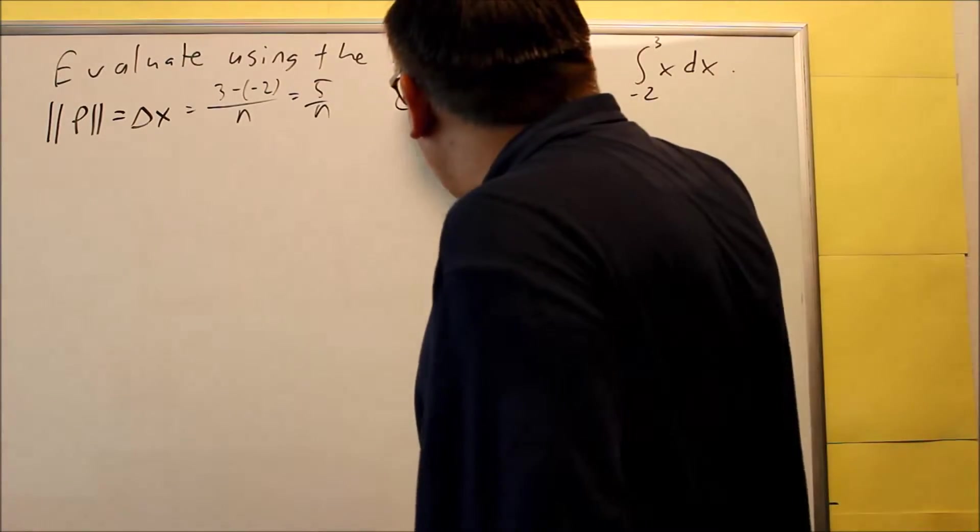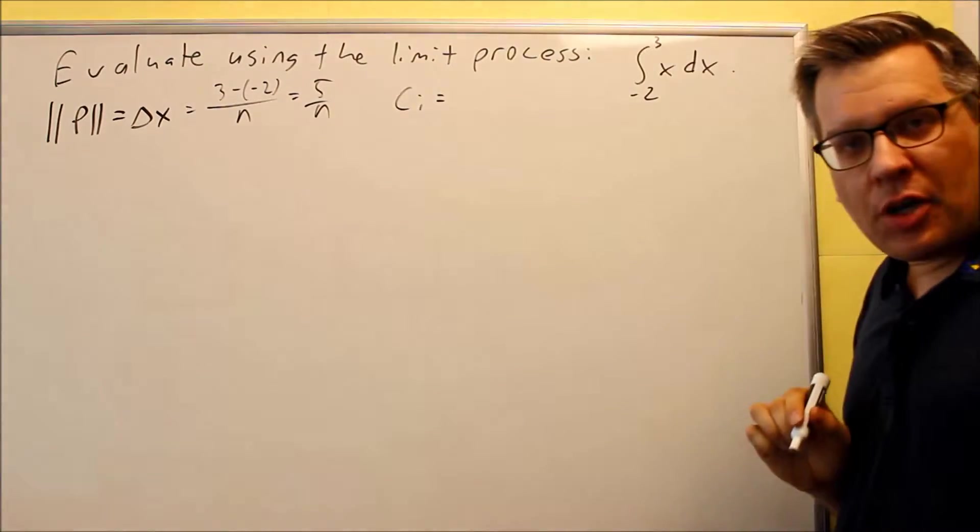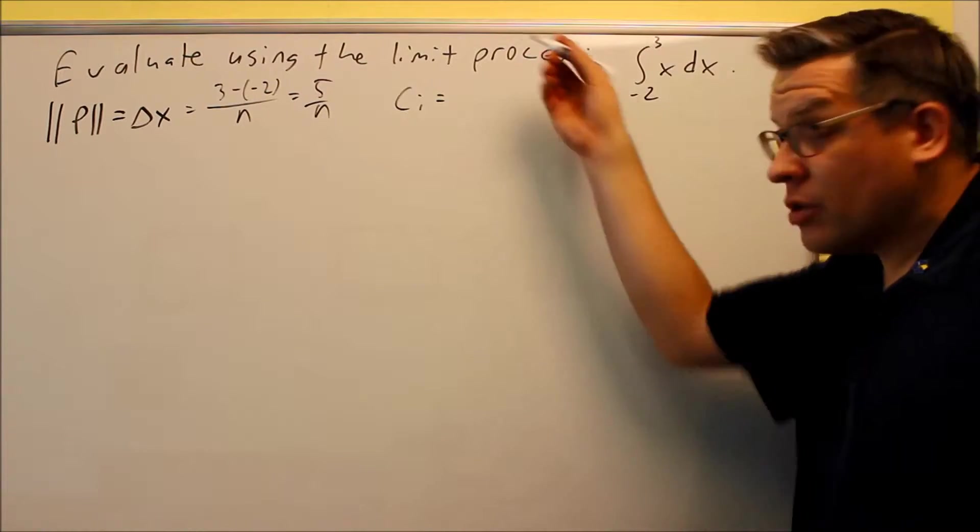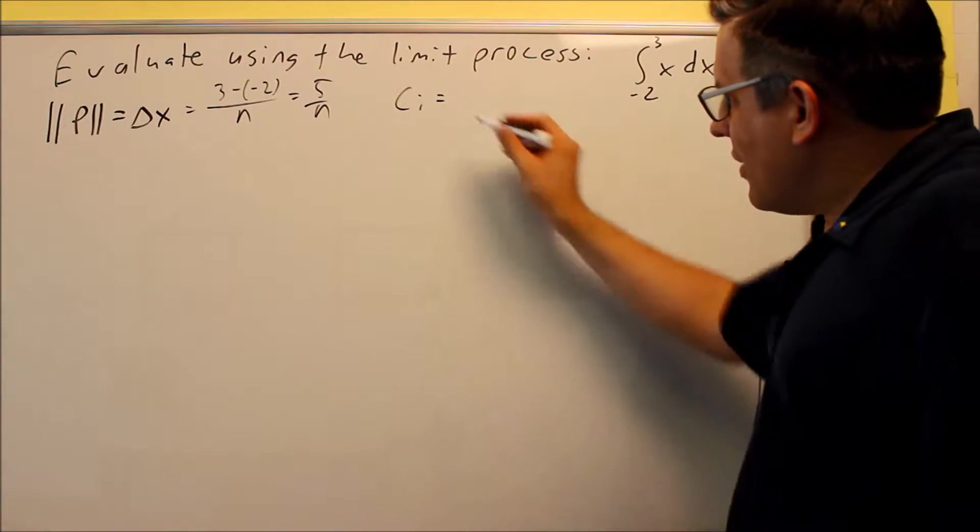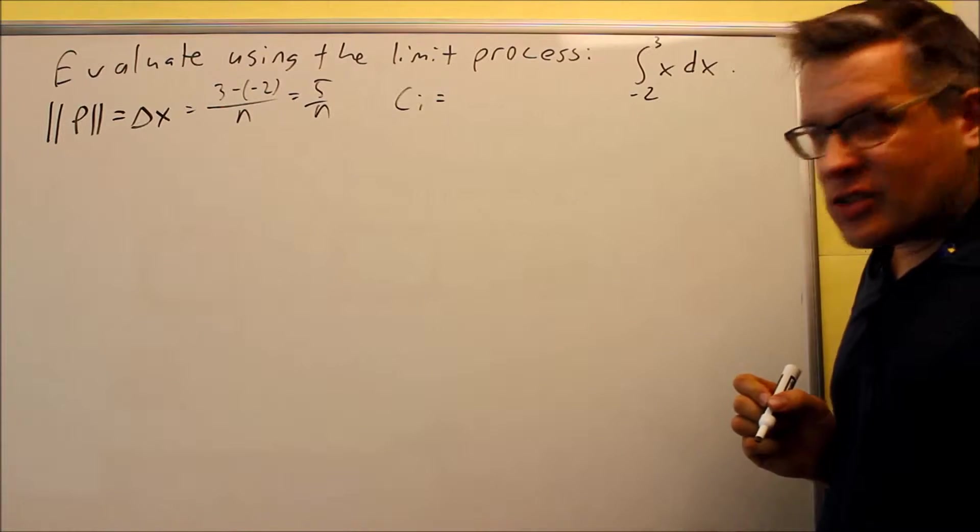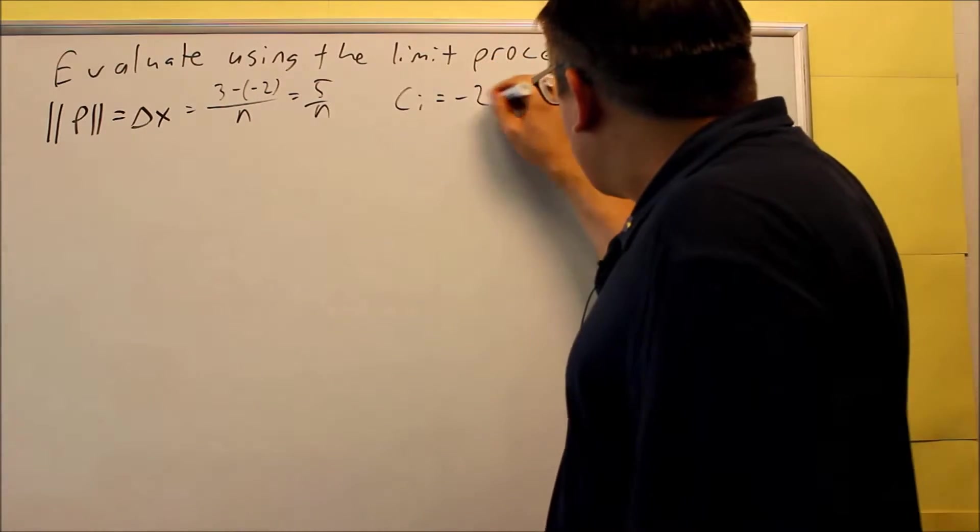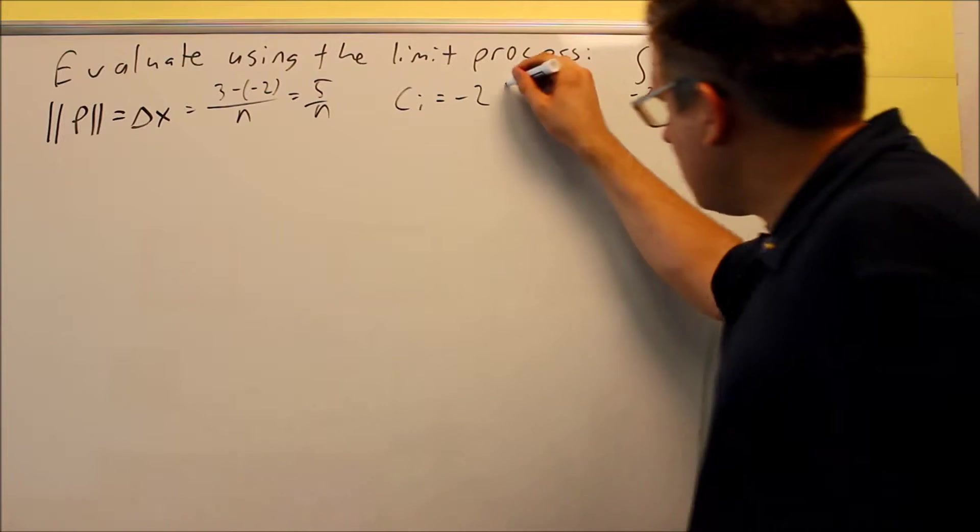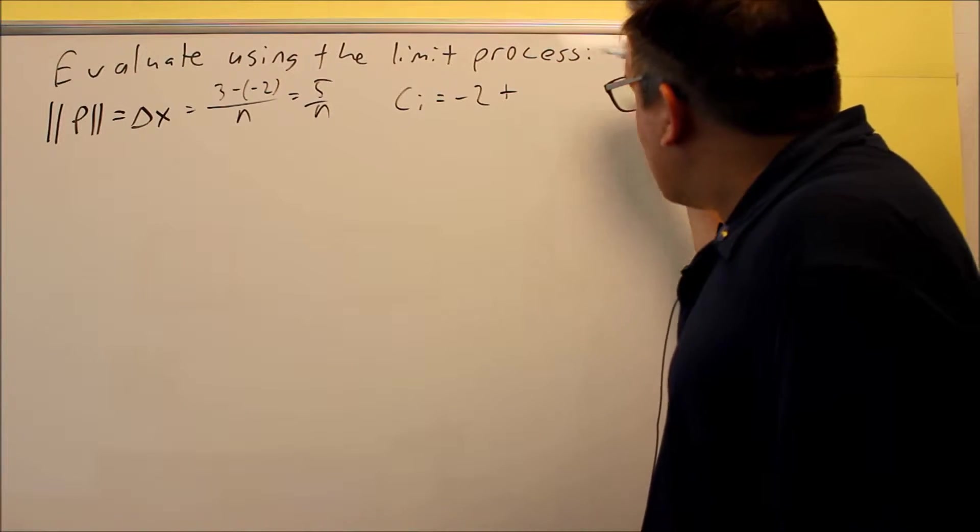Now, next, we want to find the ci, because we've got to plug that into here eventually also by using the limit process. ci is equal to a plus delta x i. Your a we mentioned was, bottom number always, negative 2 plus delta x i.